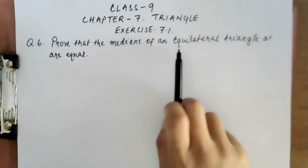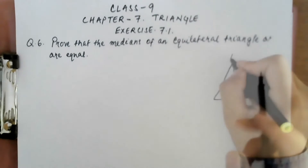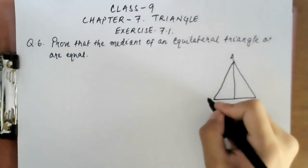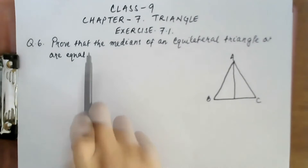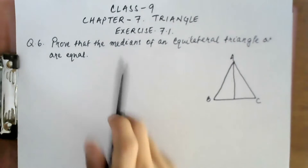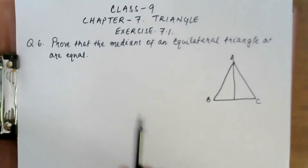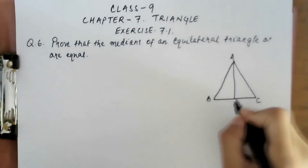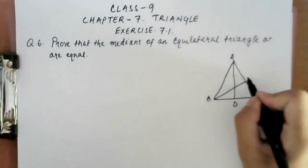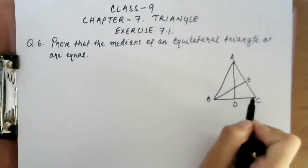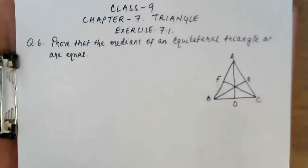We are given an equilateral triangle ABC. The question states that the medians — there is more than one median — the first median is AD, the second one is BE, and the third one is CF. The first and most important step in geometry is the figure.